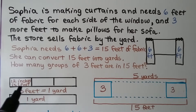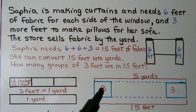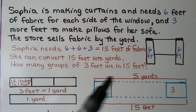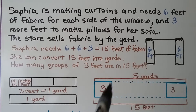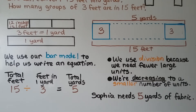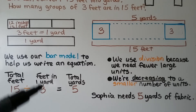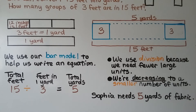She can convert the fifteen feet into yards. One yard is three feet. Using a bar model, we can see how many groups of three feet are in fifteen feet — that's five yards. We write the equation: fifteen feet divided by three feet in one yard equals five yards. We use division because we need fewer large units. Sophia needs five yards of fabric.